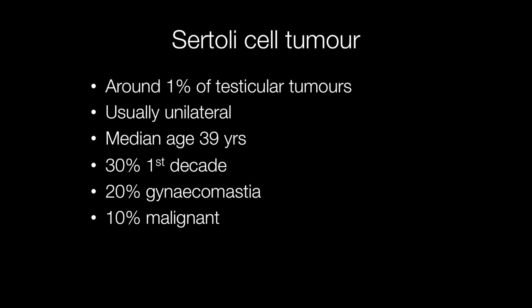Sertoli cell tumours are a type of sex cord stromal cell tumour. They are fairly rare, accounting for around 1% of all testicular tumours. They are usually unilateral with a median age of 39, but 30% occur in the first decade. Some Sertoli cell tumours produce oestrogen, resulting in 20% of them presenting with gynaecomastia, and a number may also present with impotence. The usual presentation, however, is of a testicular mass.